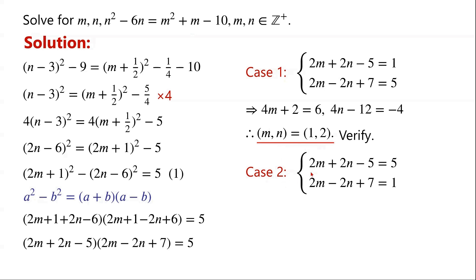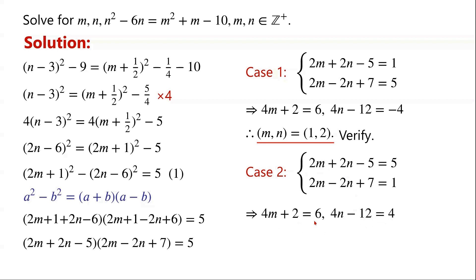For case 2, we add the two equations: 4m plus 2 equals negative 6, giving 4m equals negative 8. We subtract the second equation from the first: 4n minus 12 equals 4, giving 4n equals 16. So m equals 1 and n equals 4.